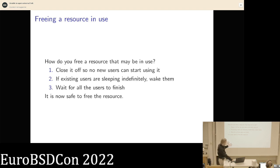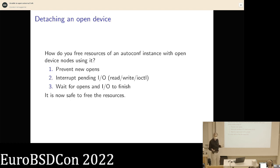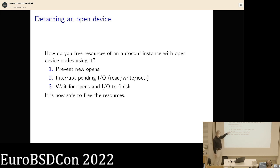This three-step pattern appears in many places — not just attach and detach, but also suspend and resume. With an autoconf instance that has a slash dev node, you need to prevent new opens of that dev node, interrupt any pending I/O so programs reading from your USB device will fail with ENXIO or EIO, and then wait for all that logic to finish before freeing resources in detach.